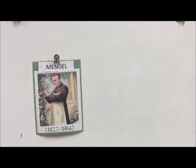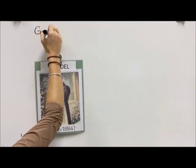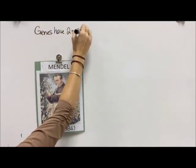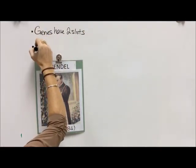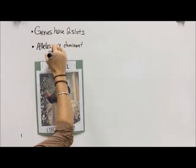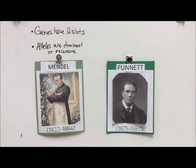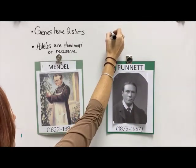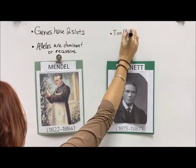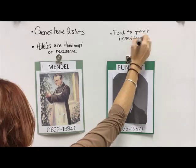Remember our friend Gregor — he told us that genes have two slots of information and that the alleles could be dominant or recessive. That's what he figured out. But where he left off was where our new friend Reginald came in. Reginald came up with a great tool that we still use today to predict inheritance.